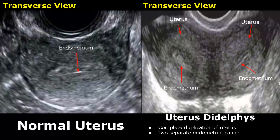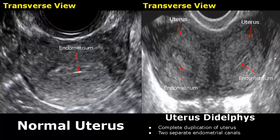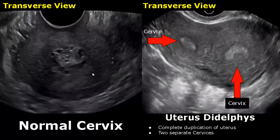Here we have transvaginal images in the transverse plane. This is the normal uterus and this is uterus didelphys. We can see two separate uteri and two separate endometrial canals. These are transverse images of the cervix taken transvaginally. Here is the normal cervix, and over here we have two separate cervices as well, because there is complete duplication of the uterus.